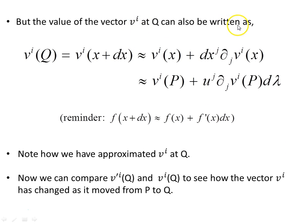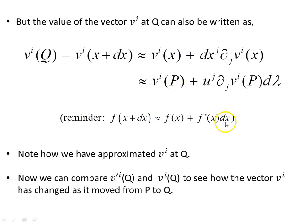The value of the vector v at q can also be written as v i of q equals v i of x plus dx, which is approximately equal to this expression evaluated at point p. Recalling from high school calculus that f of x plus dx is approximately f of x plus f prime of x times dx for small dx — which is the infinitesimal quantity we're dealing with — this first-order approximation allows us to substitute the expression for v at q in that form. That is how we approximate v at q.